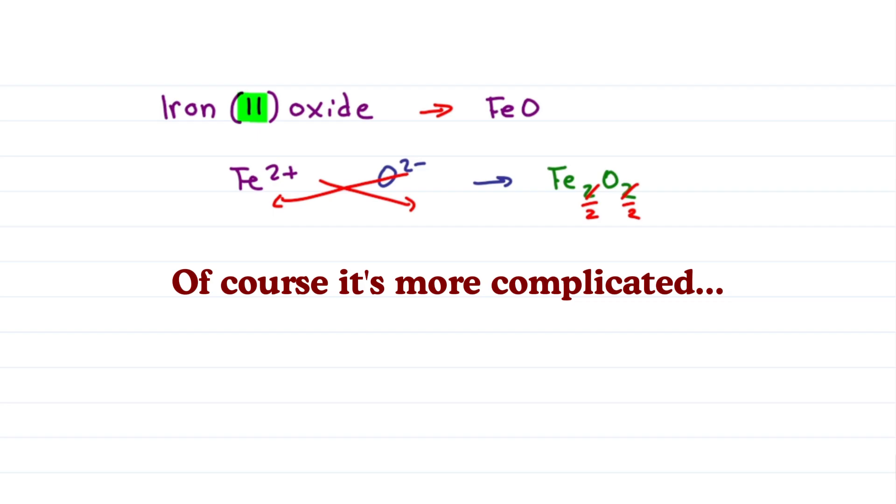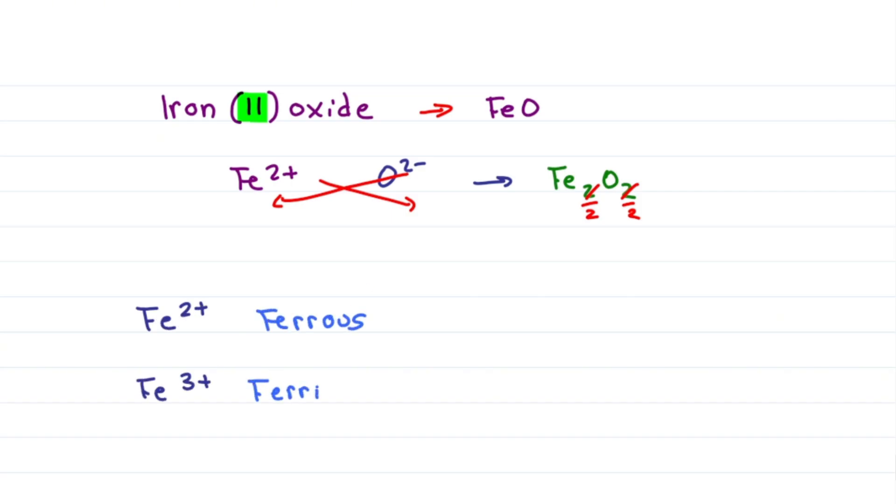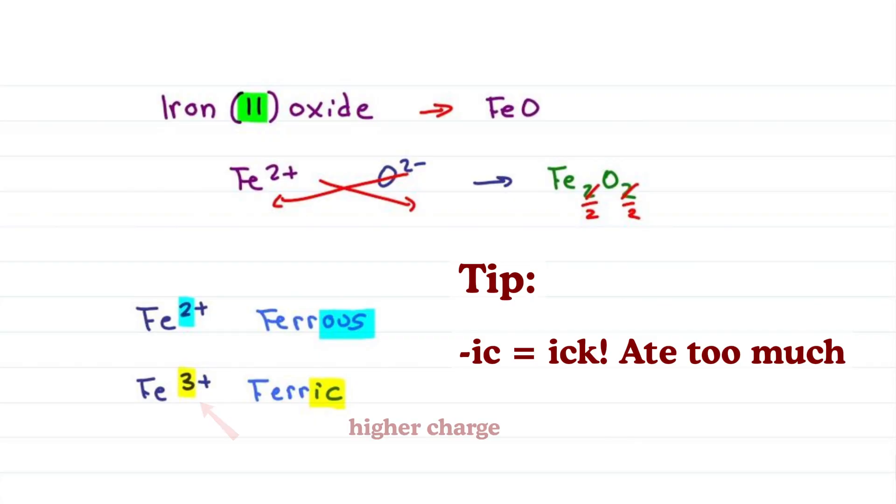But scientists didn't want to make this so easy, so they also came up with special names. Fe2 plus is ferrous and Fe3 plus is ferric. Here's how I think of it. Since ick is more than ous, I think ick, I ate too much, too much charge in this case for the higher charge.